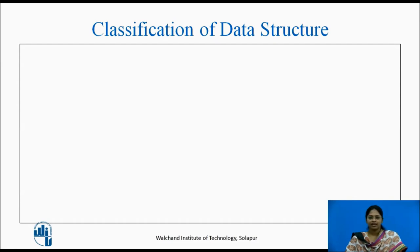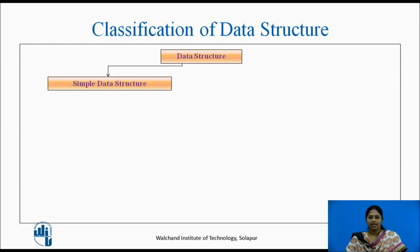Let's see the classification of data structure. Data structure is classified as simple data structure and primitive data structure. Simple data structure can be constructed with the help of primitive data structure. A primitive data structure represents the standard data types of any computer language.